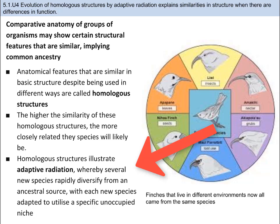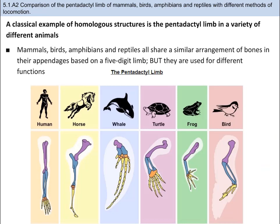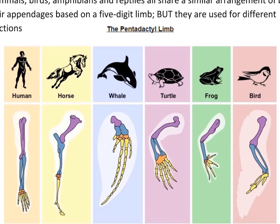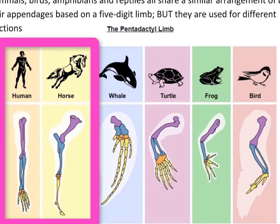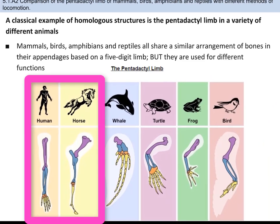Homologous structures illustrate the idea of adaptive radiation, where several new species that cannot breed with each other diversify and inhabit unoccupied areas. One classic example of a homologous structure that you need to know is the pentadactyl limb. Penta is the root word for five. The five-digit limb is very similar in structure in mammals, birds, amphibians, and reptiles, but the functions are quite different. You can compare the human with the horse — scientists have been able to determine that even the hand and the hoof are very similar in structure.